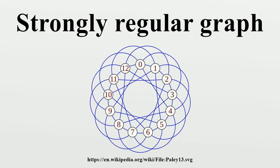The four parameters in an SRG are not independent and must obey a certain relation. The relation can be derived through a counting argument as follows. Imagine the nodes of the graph lying in three levels. Pick any node as the root node in level 0. Then its K neighbor nodes lie in level 1, and all other nodes lie in level 2. Nodes in level 1 are directly connected to the root, hence they must have lambda other neighbors in common with the root, and these common neighbors must also be in level 1.